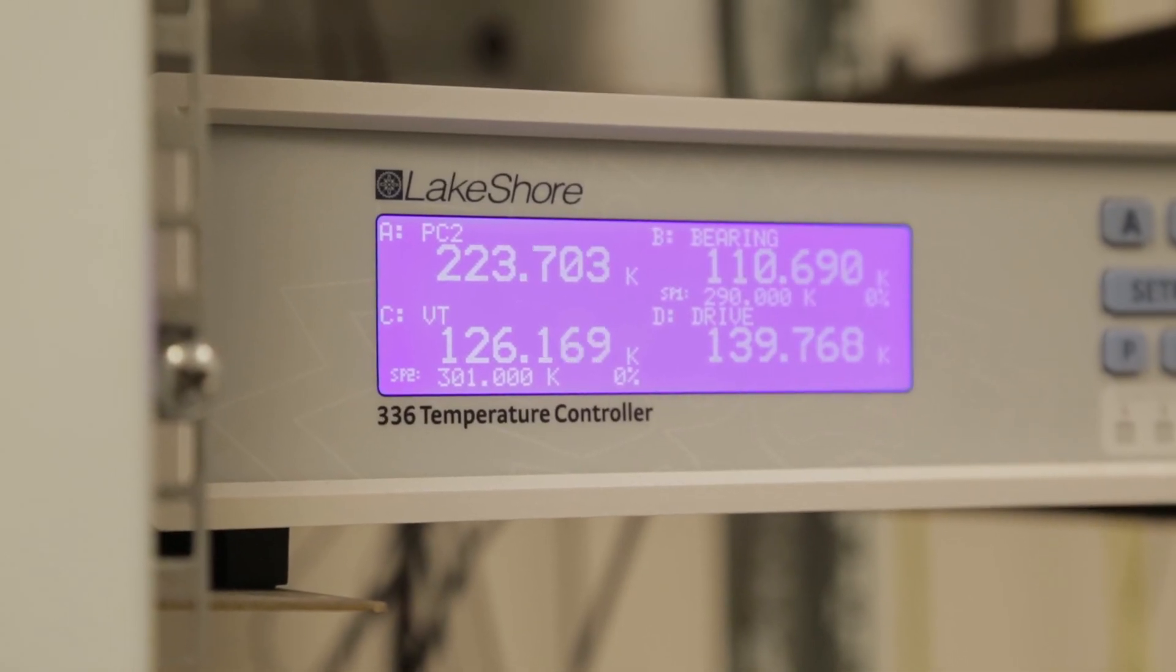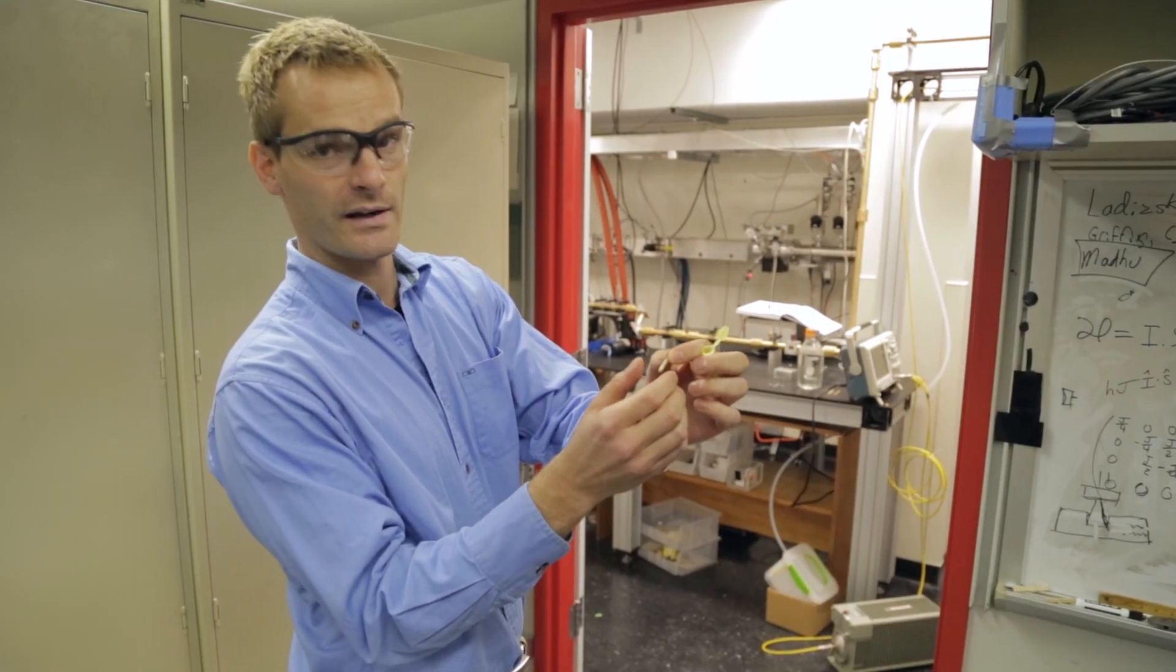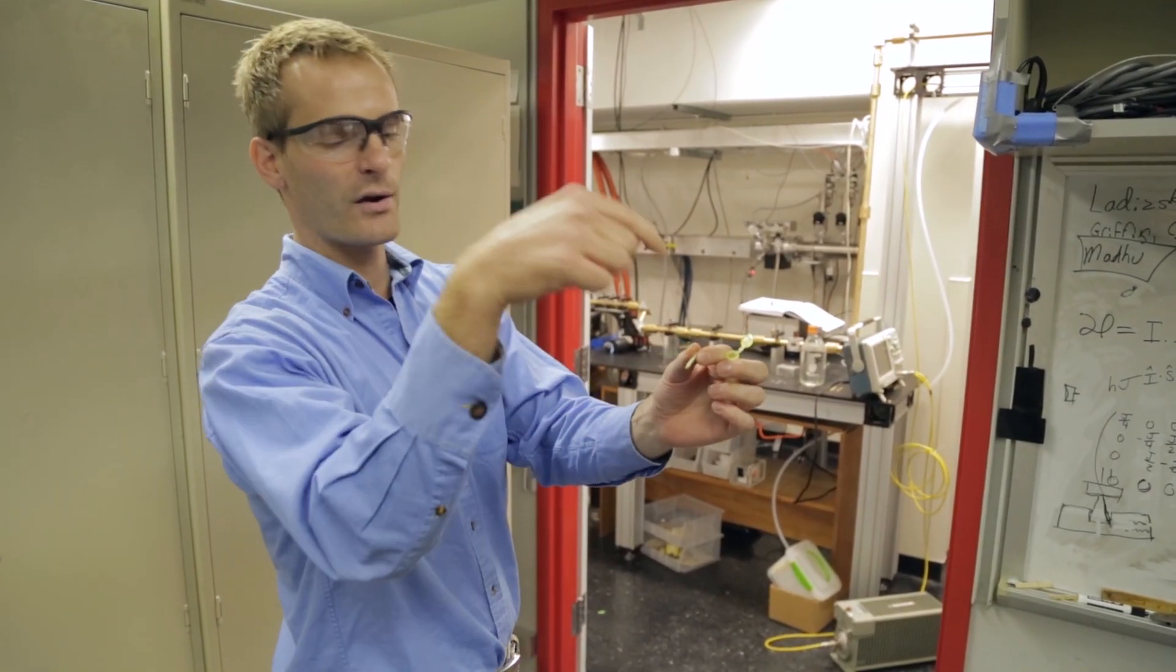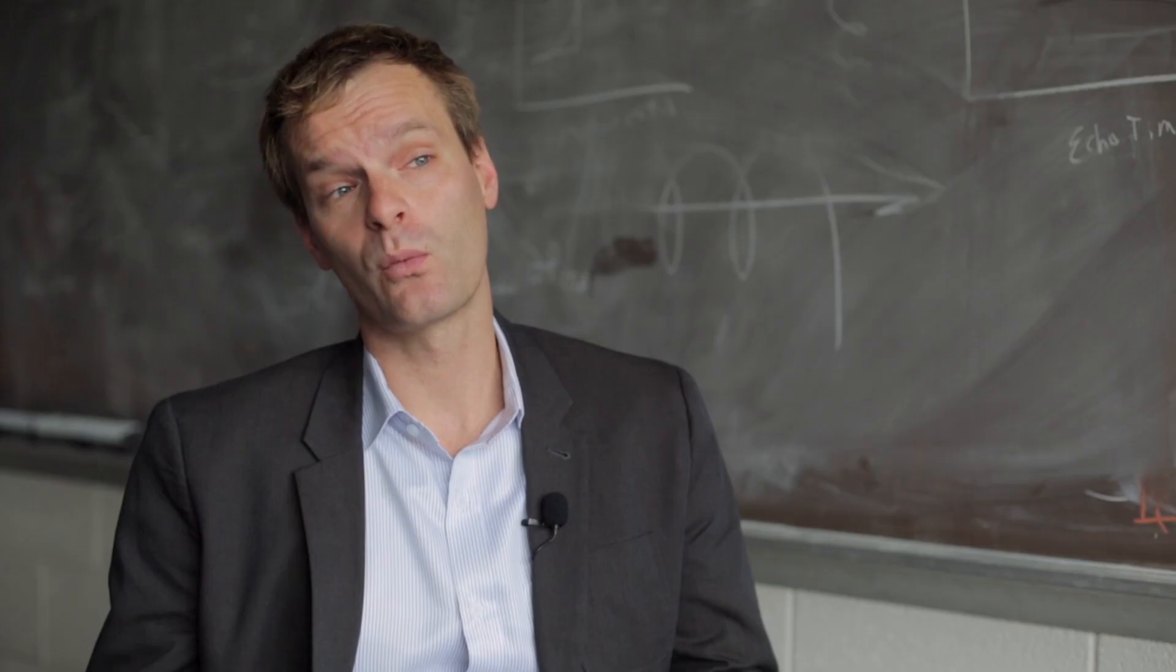When it gets to about 120 Kelvin we're going to drop in this rotor that has our first standard sample in it and it's going to be spinning at the magic angle and then we're going to shine the microwaves on it and see if we can get a big NMR signal from it.